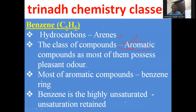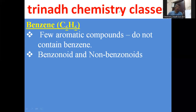Benzene is a highly unsaturated hydrocarbon and its molecular formula is C6H6. Even though it is highly unsaturated, it never loses its unsaturation — the unsaturation is retained. Aromatic compounds which contain a benzene ring are called benzenoids, and those that do not contain a benzene ring are called non-benzenoids.